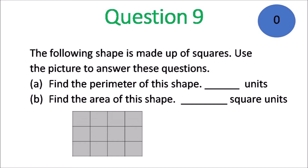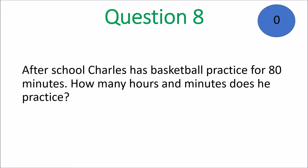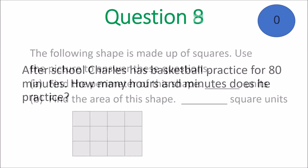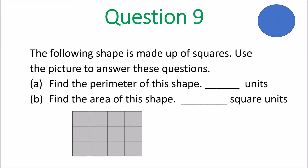And now we move on to Question 9. The following shape is made up of squares. Use the picture to answer these questions. A: Find the perimeter of the shape — just put the number and that would be in units. B: Find the area of the shape — that would be in square units. Do the perimeter, then calculate the area.